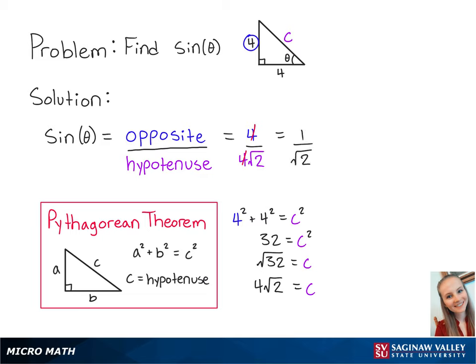We want to rationalize the denominator, so we're going to multiply the top and the bottom by the square root of 2 so that we have the square root of 2 over 2.